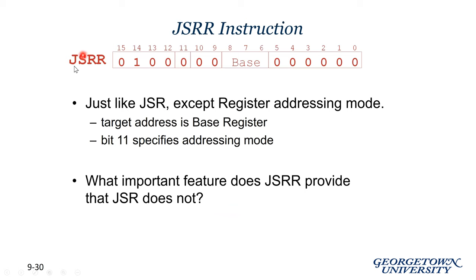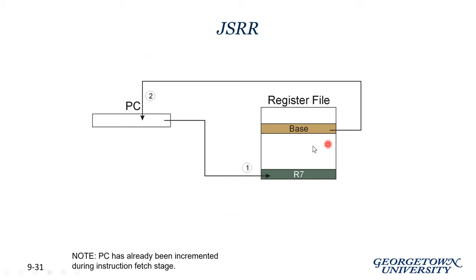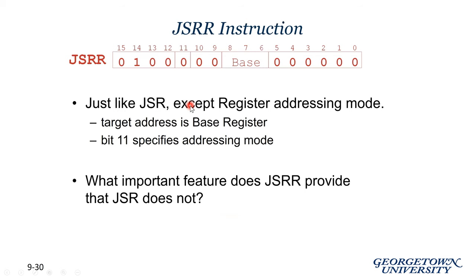For JSRR, when bit 11 is 0, we use register-based mode. It simply takes the address stored in a register indicated in bits 8, 7, and 6, and updates the PC to that value — jumping there directly. JSRR says: save the way back, go to the base register indicated in the instruction, take the memory location stored there, and update the PC. The opcode is the same as JSR; the difference between them is bit 11, the control bit.